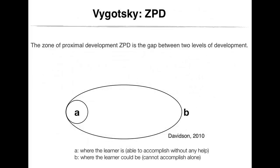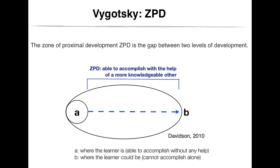Vygotsky also discusses another idea in his theory. He explains that when guided by an expert adult or peer, a child can attain more cognitive development than by being alone. There are tasks that children cannot do on their own and others they can do on their own. In order for a child to master a skill, he or she would need the help of a skillful and knowledgeable adult or peer. The child starts by observing the expert performing, then tries to perform the task with the help of the experienced adult or peer. As the child gradually masters the action, the expert withdraws. Vygotsky calls this the zone of proximal development.